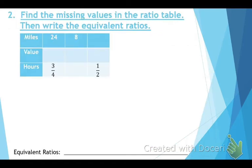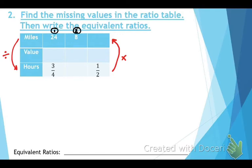Number two asks you to write the missing values in the ratio table and then write the equivalent ratios. When going from top to bottom in a ratio table, you divide. Going from bottom to top, you multiply. We need to find three different values for miles per hour.